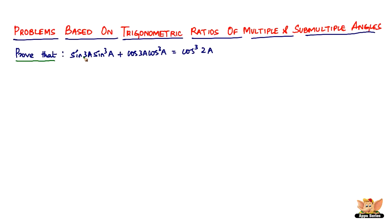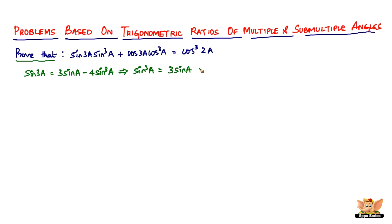We know that sin(3a) = 3·sin(a) − 4·sin³(a). We don't know much about sin³(a) directly, so we want to derive it from this formula to make the problem simpler. Rearranging, we get sin³(a) = (3·sin(a) − sin(3a)) / 4.